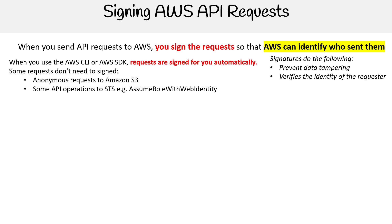Not every single request requires signing. For Amazon S3, there are anonymous requests — for example, when you have a public bucket and you just want people to be able to read files from it. There are also some API operations, such as AssumeRoleWithWebIdentity, where you're not going to be passing signed requests, because that is what STS is used for — getting credentials. At that point, you wouldn't have any credentials to sign with.